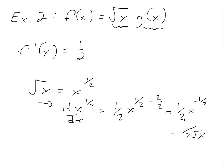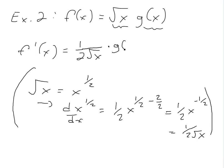You can learn more about this in the video links below. So putting this in brackets, we have 1 over 2 square root of x, times g of x, plus square root of x times g prime of x. We don't need to know what g of x is — we just write the derivative as g prime of x.